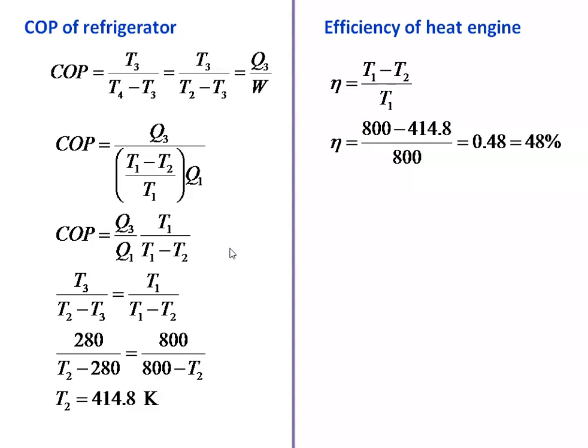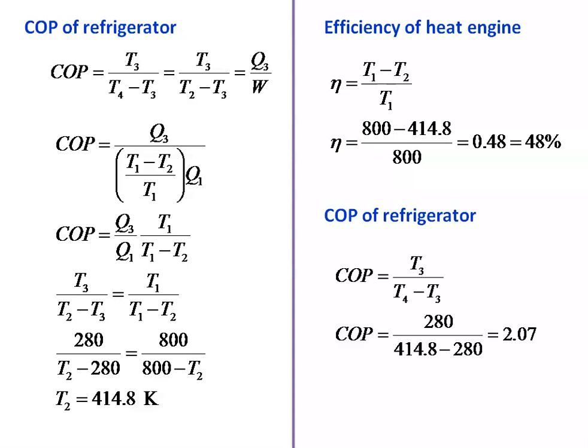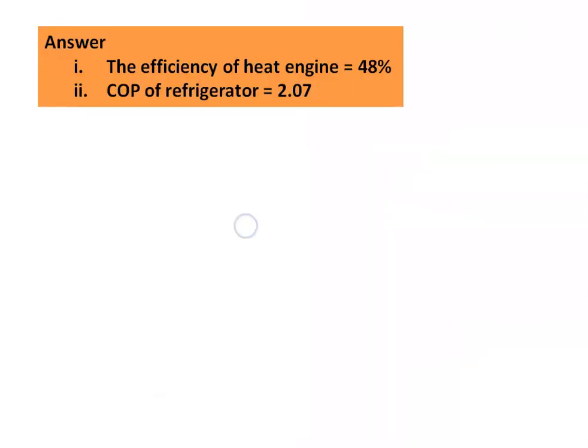Now, the efficiency of the heat engine equals (T1 minus T2) divided by T1, which is (800 minus 414.8) divided by 800 equal to 0.48, which is 48 percent. The COP of the refrigerator equals T3 by (T4 minus T3), which is 280 divided by (414.8 minus 280) equal to 2.07. The answer: efficiency of the heat engine is 48%, COP of the refrigerator is 2.07.